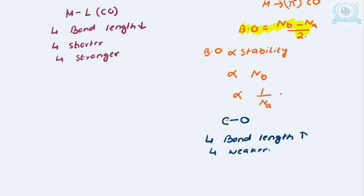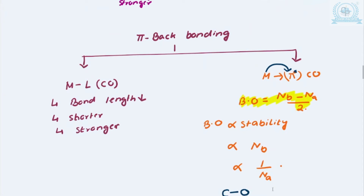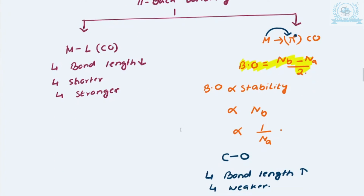These things are very important. Even though pi backbonding is happening, the consequences are different when talking about two different cases. If they ask you about pi backbonding, you have to notice whether they are asking about the bond length of the metal–ligand or the carbon–oxygen — pi backbonding gives a different story for each. This has to be very clear to you.